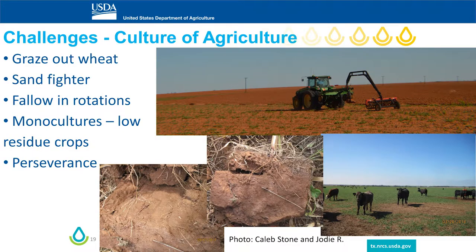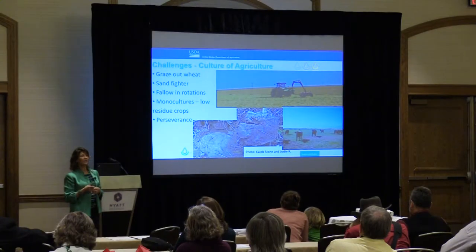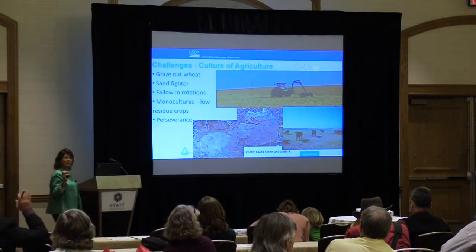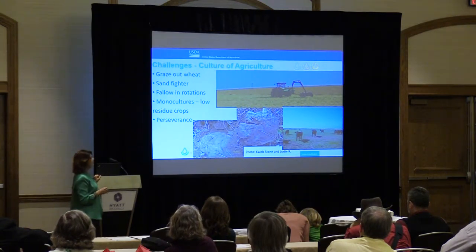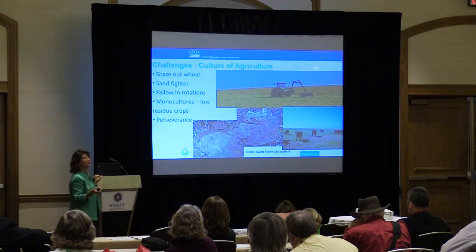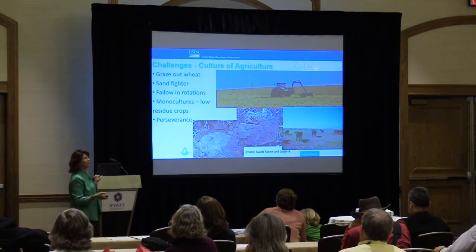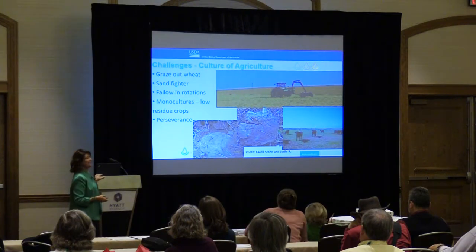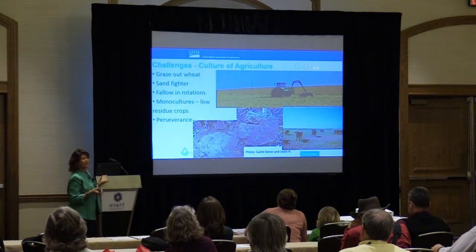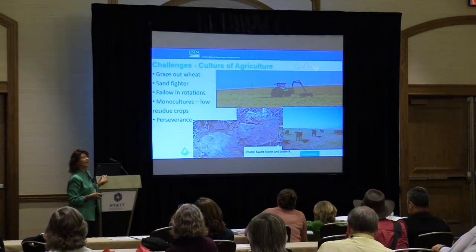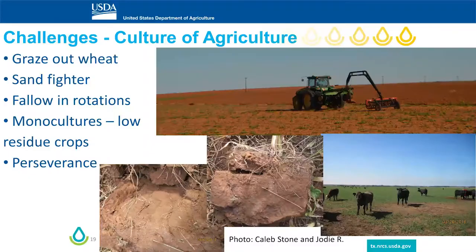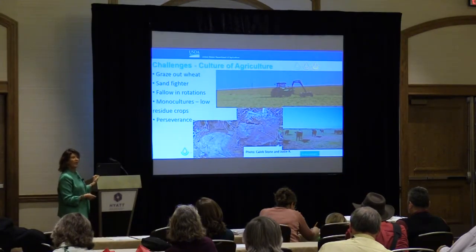Another challenge is graze-out wheat. Farmers buy young livestock, plant wheat, then put cattle out to graze the wheat — or graze it to a point and let some go to grain. The issue is compaction problems. A lot of times they won't move the cattle because they plan to sell them when it's done. They buy the cattle, put them on graze-out wheat, then sell the cattle. But these soils get compacted and those issues can last for years, affecting the following cash crop.